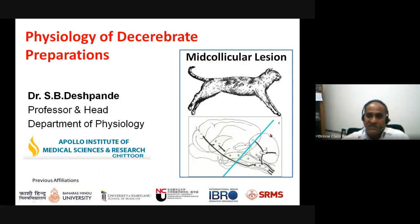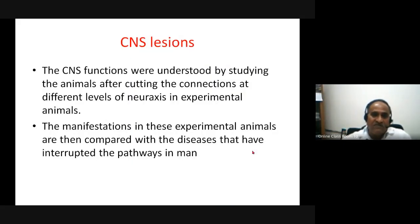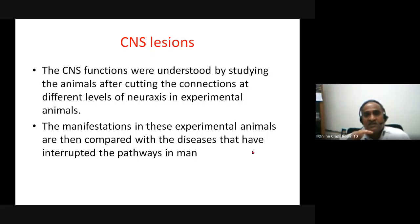In this animal, the hindbrain — that is, the pons, the medulla, and the cerebellum — are left intact. To understand the various functionalities of the nervous system's neural elements, scientists took animals and removed different parts of the brain at different levels to observe the effects in experimental animals.